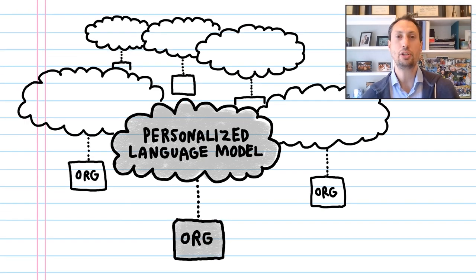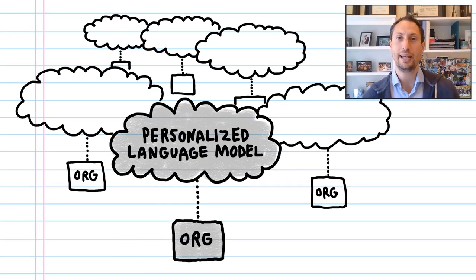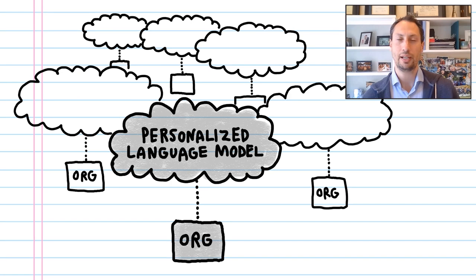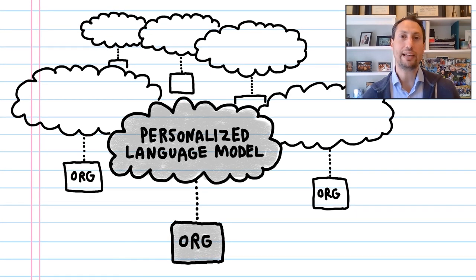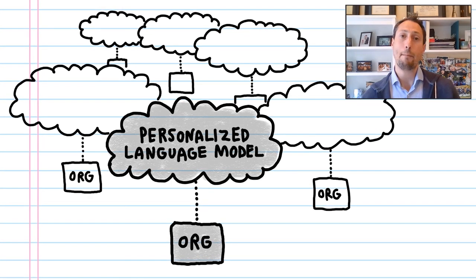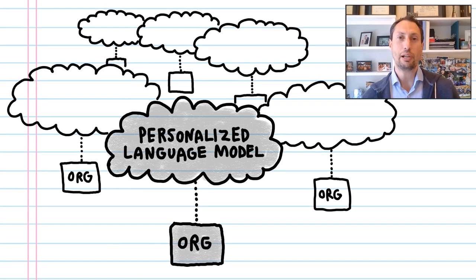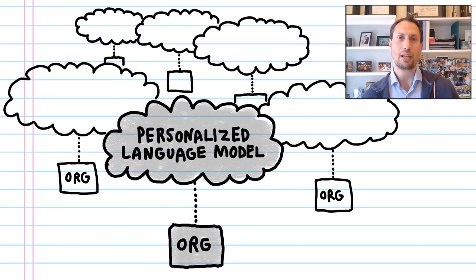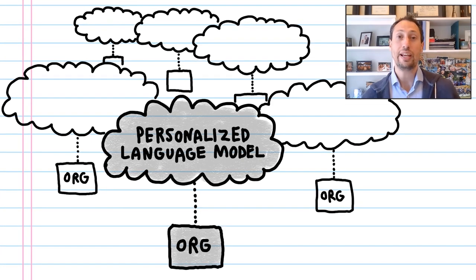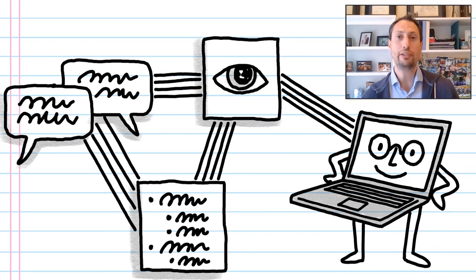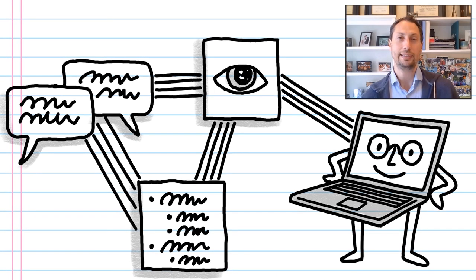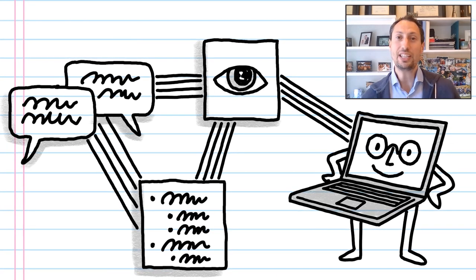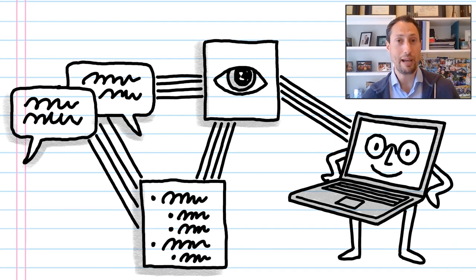Every organization uses its own distinct vocabulary that a language model must learn. To achieve this, we're training one personalized language model per organization by augmenting our base Turing model with the data generated within the organization itself. As with the base model, we use self-supervised learning to do this without the need for labeled data. This allows us to automate the learning process within each organization while ensuring privacy.